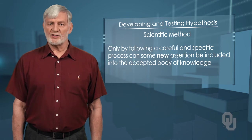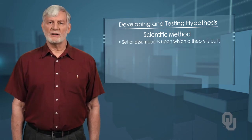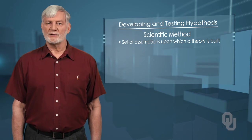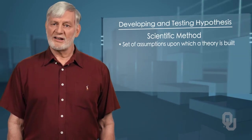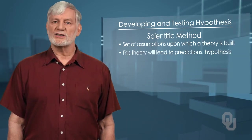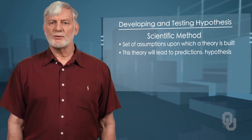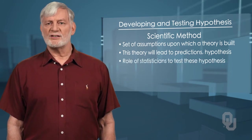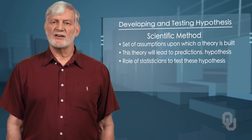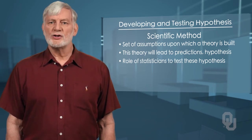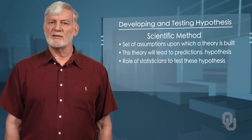The scientific method states that only by following a careful and specific process can some new assertion be included into the accepted body of knowledge. This process begins with a set of assumptions upon which a theory — sometimes called a model — is built. This theory, if it has any validity, will lead to predictions, what we call hypotheses. It is the role of statisticians to test the hypotheses of various theories to determine if they should be admitted into our understanding of our world.